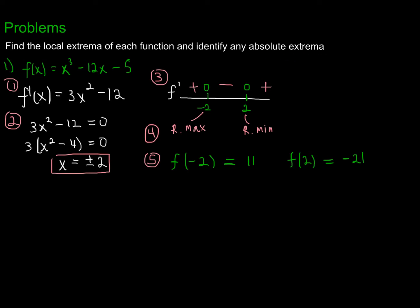Now I want to classify any absolute extrema. Thinking graphically about the cubic — it goes on forever to the right and left, decreasing left and increasing right — neither of the points at x = −2 and x = 2 are going to be absolute extrema. So for this cubic function, there are only relative extrema and no absolute extrema. You may want to get in the habit of graphing just to confirm your conclusions.